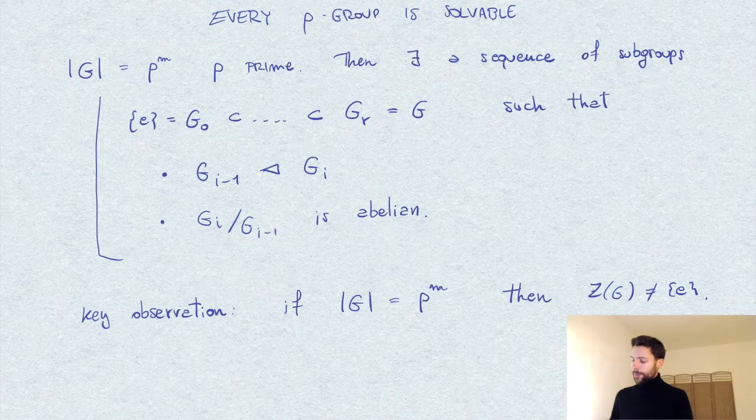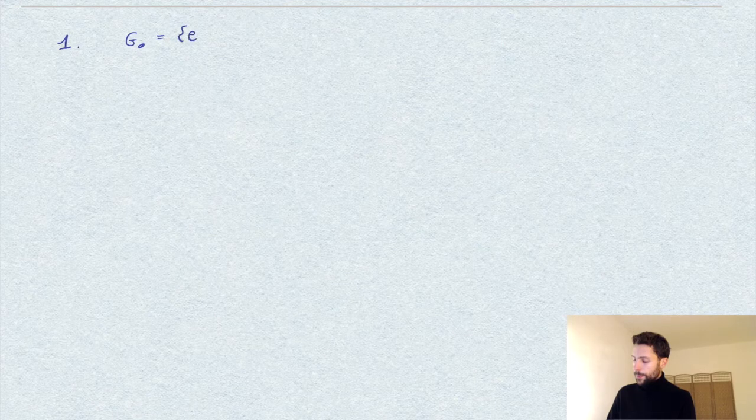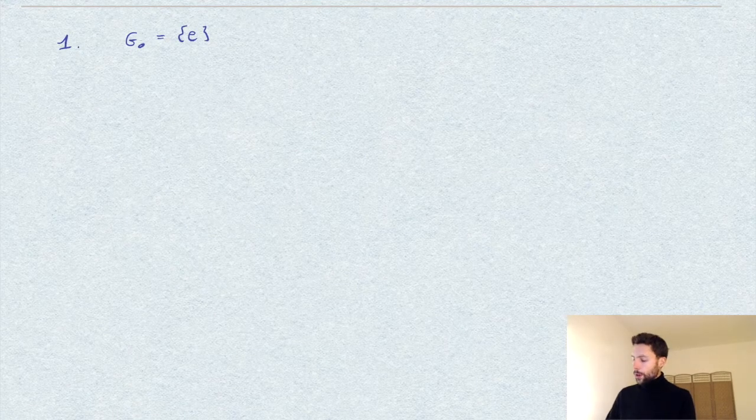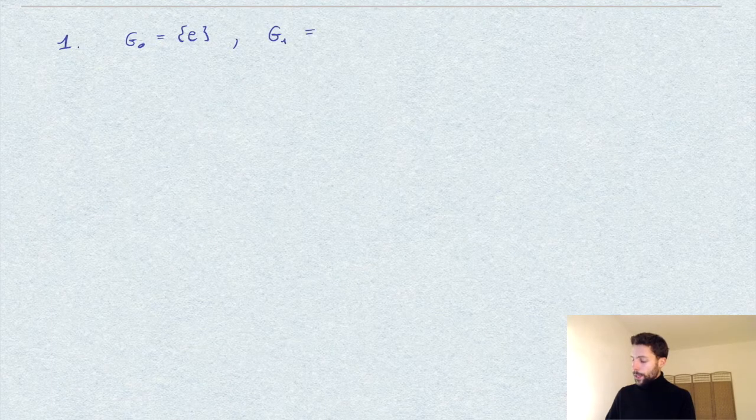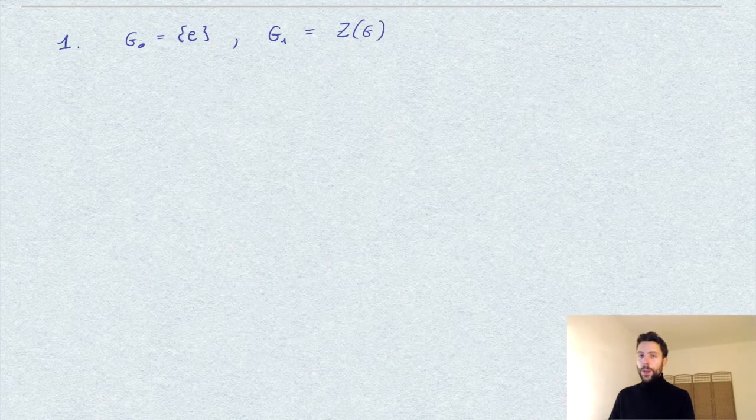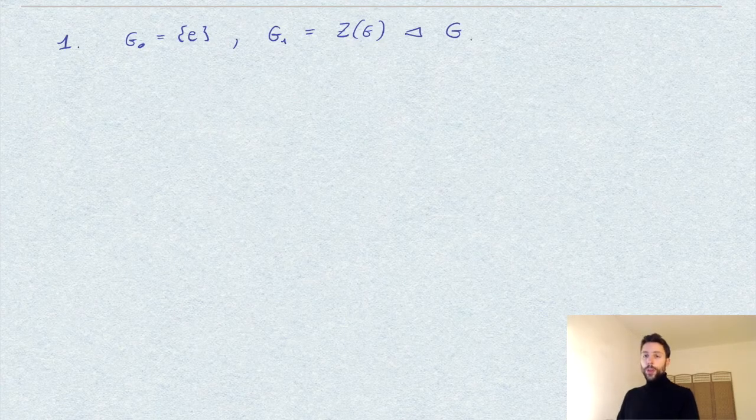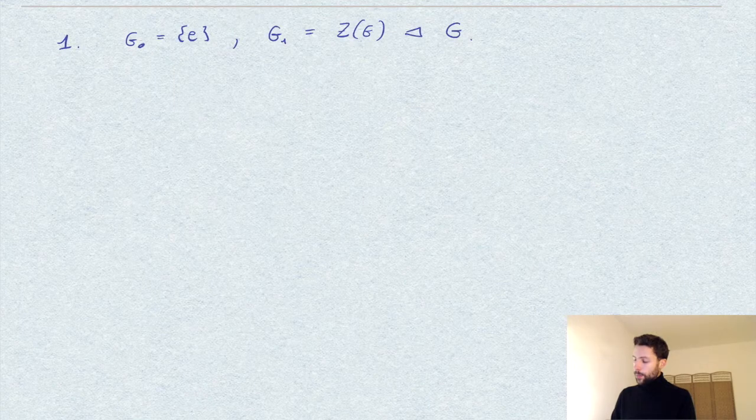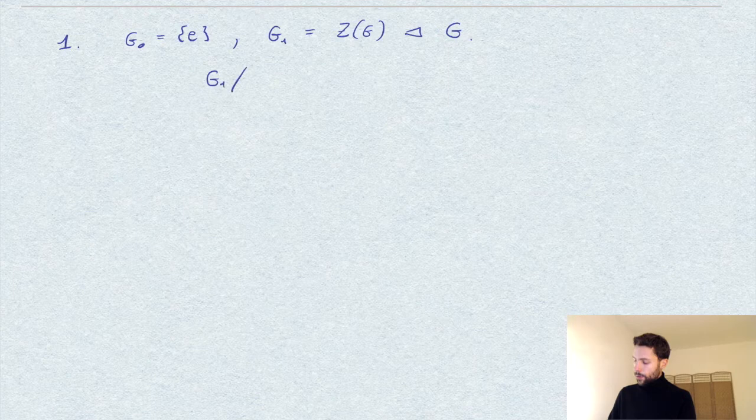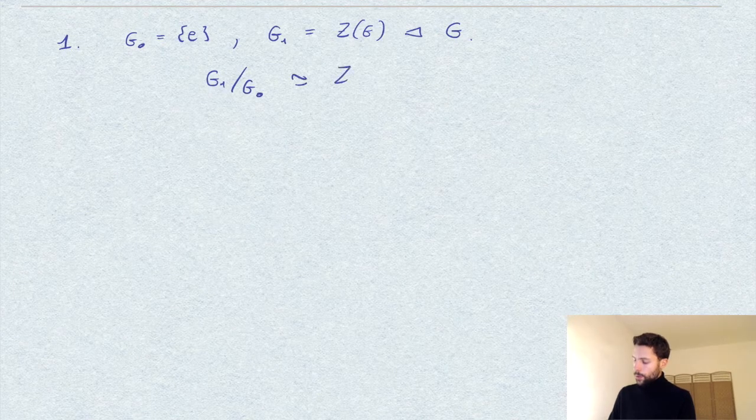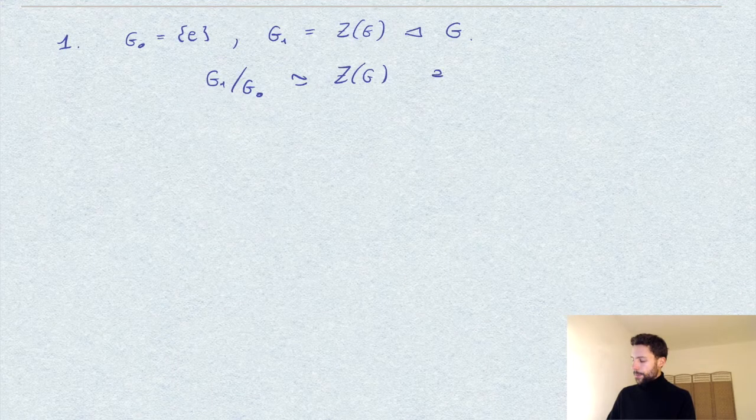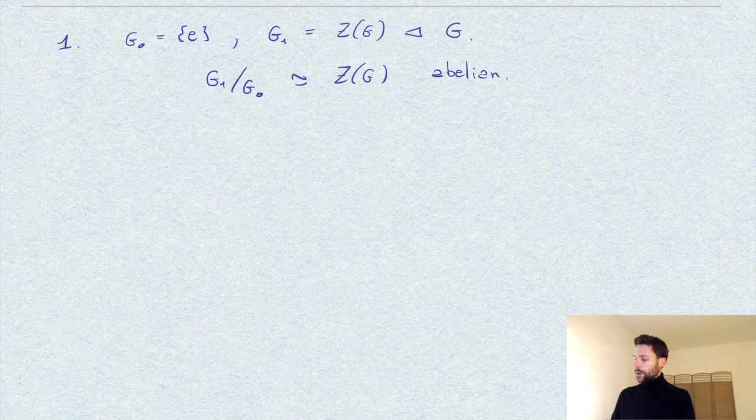So given this, let's proceed with our algorithm and explain the steps. The first step: we simply put G_0 to be the trivial group, and for G_1 we take the center. Now, of course, the center is always normal in G, so we have our first condition satisfied. Moreover, G_1 over G_0 is trivially isomorphic to Z(G), and this is abelian by definition.